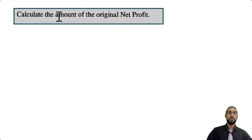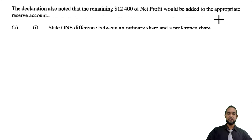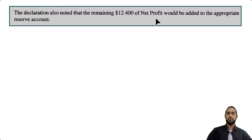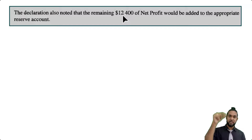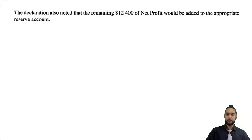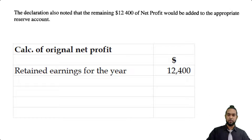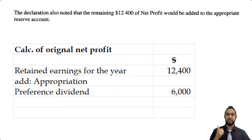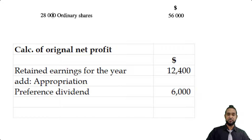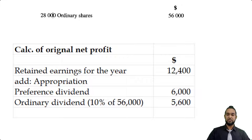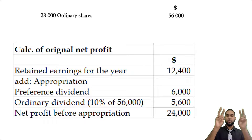Now the last part is the tricky part: calculate the amount of the original net profit. The question tells us that the remaining $12,400 of net profit would be added to the retained earnings. That remaining $12,400 is the retained profit from the current year. To find the original net profit, we start with the net profit, subtract the appropriations, and end up with the $12,400. So we have to add back the appropriations. The preference dividend we calculated was $6,000. The ordinary dividend is 10% on the par value of ordinary shares of $56,000, which is $5,600. Adding those dividends back to the $12,400 gives us the original net profit.